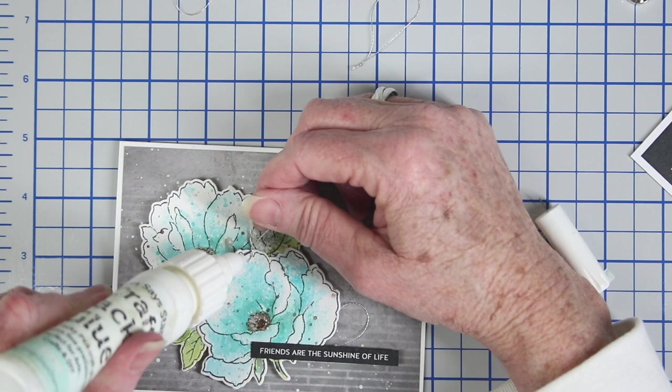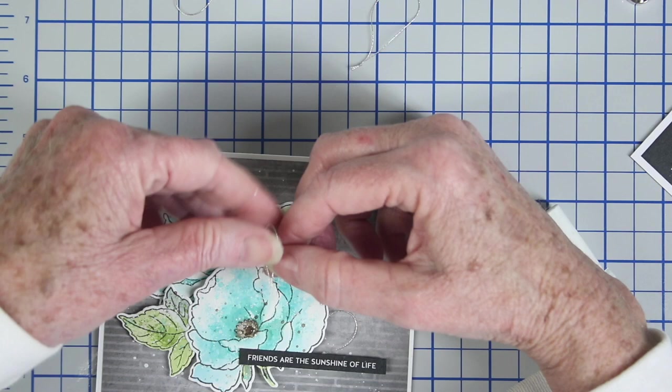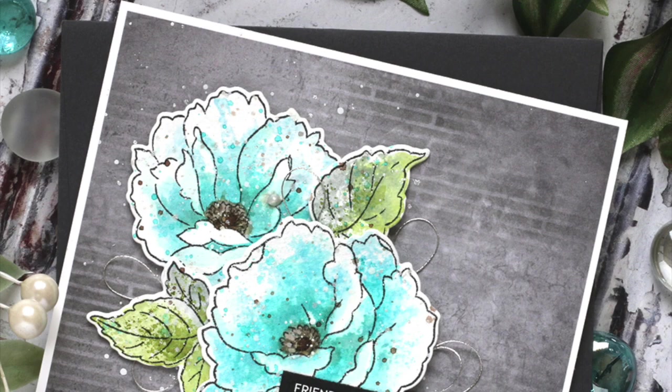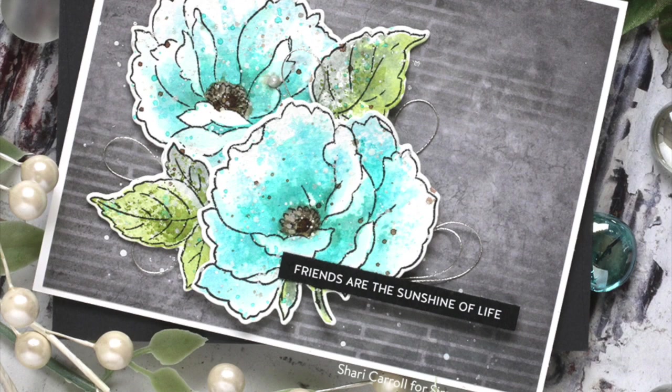And I'll be tucking in some silver thread that I've created little loops, and I'm just gluing these in between the flowers and around the outside just to give it a little more shine. And here's a look at my finished card with all the layers and the speckles and that bit of shine from the Perfect Pearls.